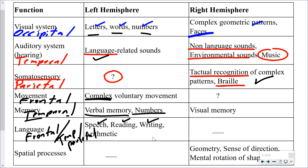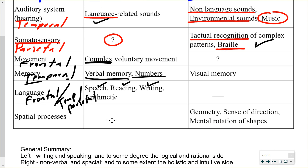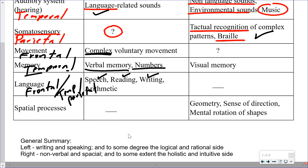Spatial processes — geometry, sense of direction, and mental rotation of shapes — are functions associated with the right hemisphere. In summary: the left side of the brain handles writing, speaking, and language-related tasks, and is considered the more logical or rational side. The right side is non-language, non-verbal, spatial in nature, and more holistic and intuitive.